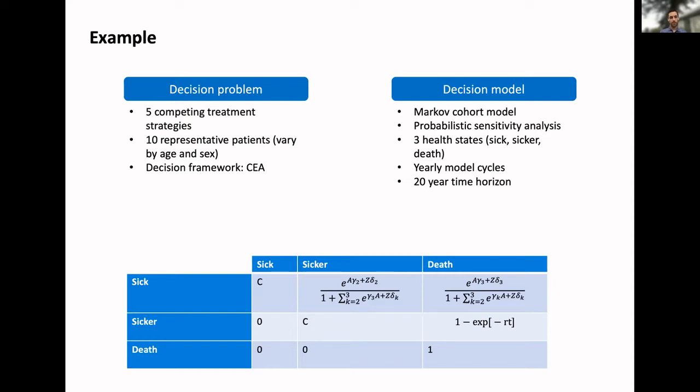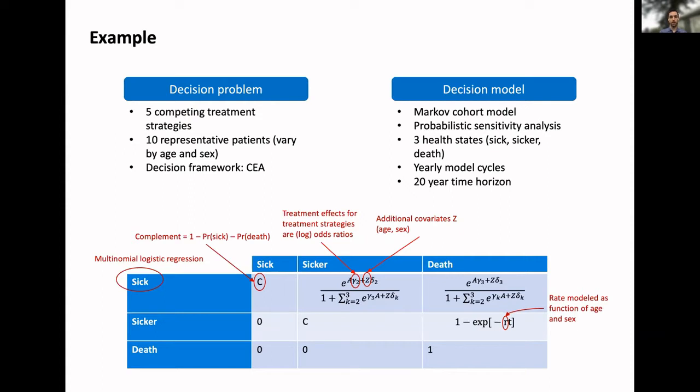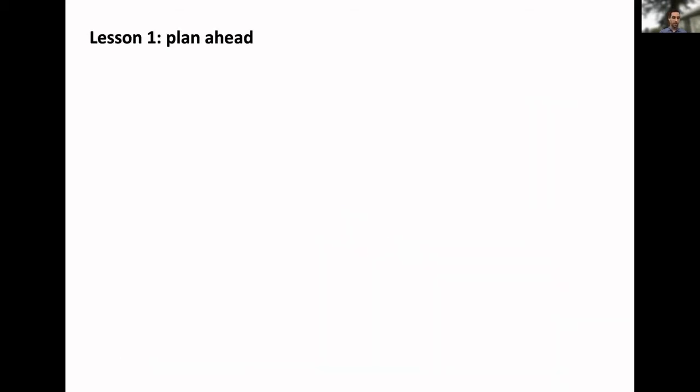The focus will be building the transition probabilities. I have a table that shows how they're built for each of the possible transitions. One thing I often see is programming that's separate from the mathematical structure. If we could make it very clear how the programming is implemented to achieve the math, that can help transparency. In the table, C is the complement, one minus the sum of all other probabilities. The transitions from the sick state will be a multinomial logistic regression with treatment effects as log odds ratios. There are also covariates, age and sex, that affect transition probabilities. From the sicker state, we'll have a single rate parameter, like an exponential survival model.